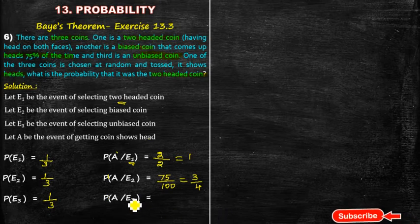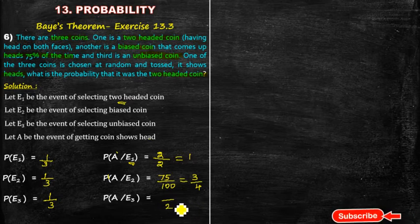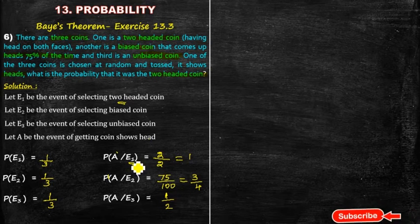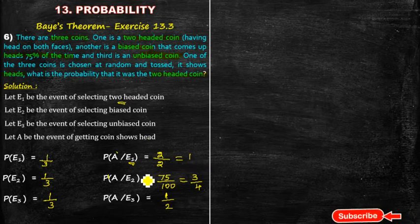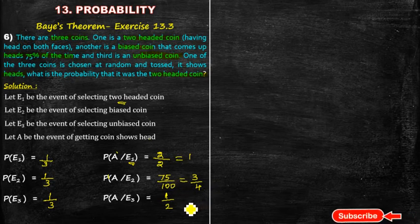For P(A|E3): E3 is the unbiased coin. Out of 2 possible outcomes, 1 is a head, so P(A|E3) = 1/2. So the conditional probabilities are: P(A|E1) = 1, P(A|E2) = 3/4, P(A|E3) = 1/2.